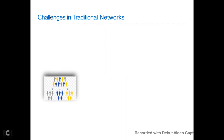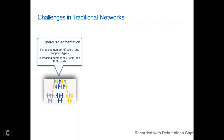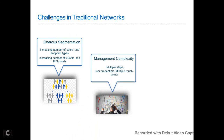Now let's look at the current challenges in traditional networks. First is segmentation — you have a large number of users and endpoint types with evolving technology: IoT devices, printers, laptops, desktops, increasing numbers of VLANs and IP subnets. Doing segmentation in a traditional campus network is not an easy task; you need VLAN spanning, VLAN alignment, and so on. Second is complexity — as security demands from the business grow, doing proper segmentation to control traffic leads to management complexity across multiple devices, multiple checkpoints, branch firewalls, branch routers, branch switches, and wireless controllers.